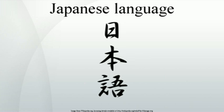Japanese pronouns also function differently from most modern Indo-European pronouns, and more like nouns, in that they can take modifiers as any other noun may. This is partly because these words evolved from regular nouns, such as kimi (you), anata (that side), and boku (I). This is why some linguists do not classify Japanese pronouns as pronouns, but rather as referential nouns. Japanese personal pronouns are generally used only in situations requiring special emphasis. The choice of words used as pronouns is correlated with the sex of the speaker and the social situation in which they are spoken.